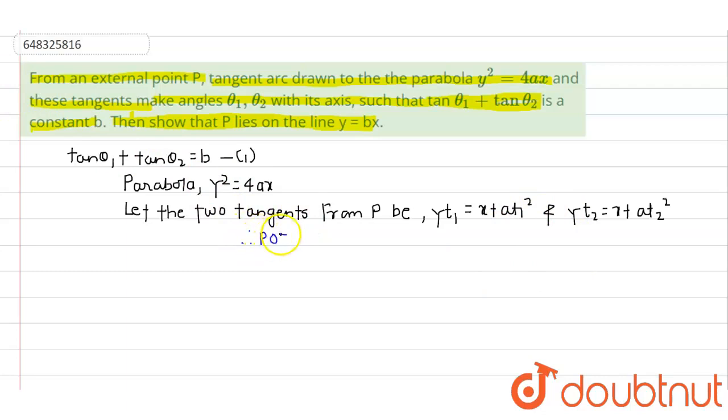Hence the point of intersection of these two tangents, that we also know, is given by (at₁t₂, a(t₁ + t₂)).